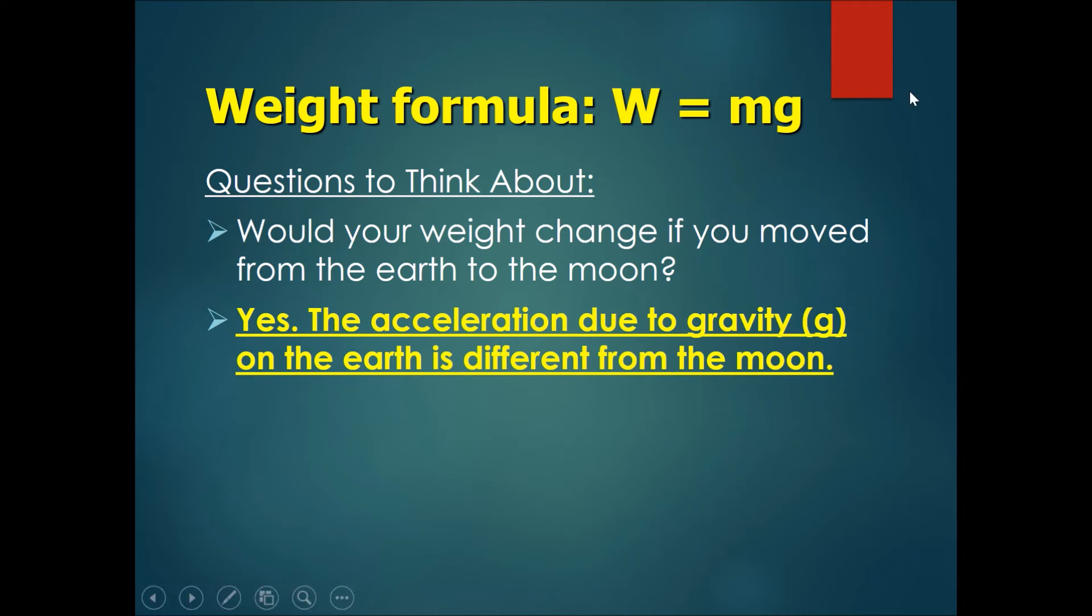So the formula is W equals mg. If you times a lower number here even though the mass remains the same, your weight would be much less on the moon. And that's why astronauts can jump very high on the moon.